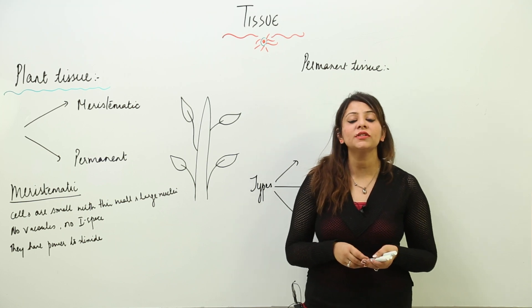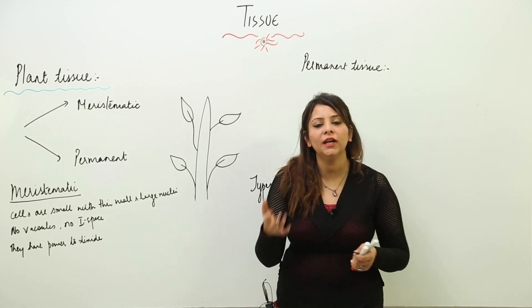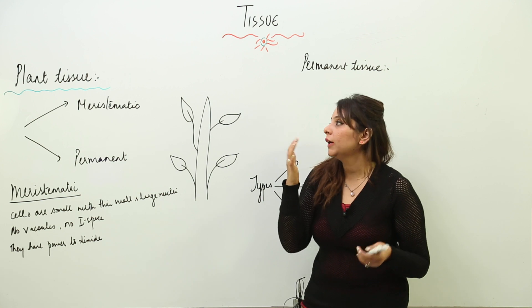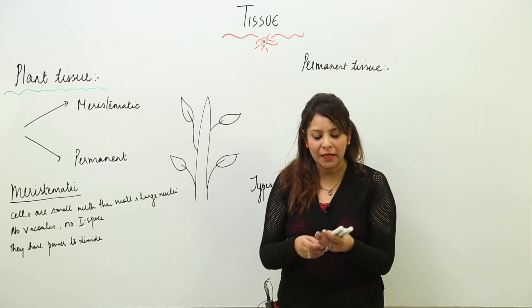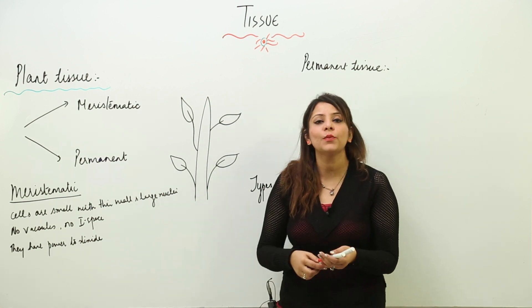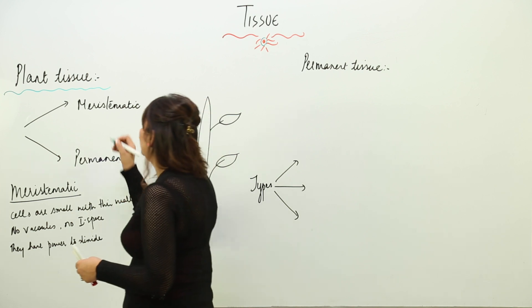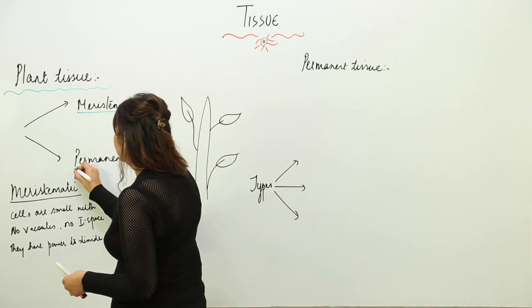Now we are going to start with the plant tissue. As you all are aware of the animal tissue, coming on to the plant tissue: plant tissues are divided into two categories — one is the meristematic, another is the permanent.